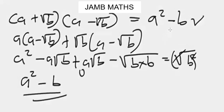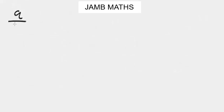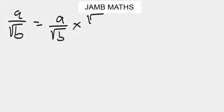Now let's look at the last rule for surds, which involves rationalization. If you have something like a over square root of b, this is the same as a over square root of b times square root of b over square root of b.